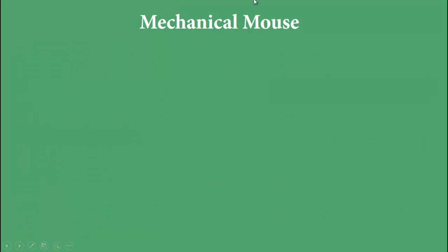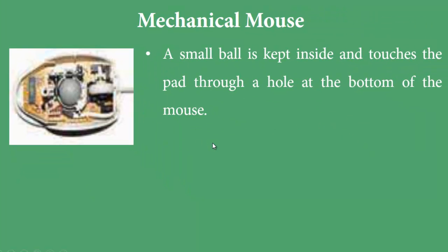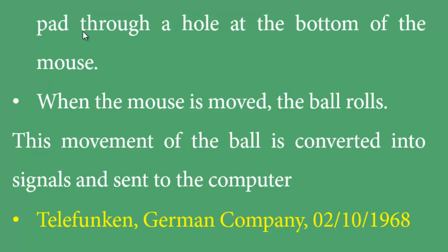The mechanical mouse has a ball kept inside, which touches the mouse pad through a hole at the bottom. When the mouse is moved, the ball rolls, and this movement is converted into signals sent to the computer. It has two buttons — right and left — and was invented by Peli Fankin, a German company, in 1968.